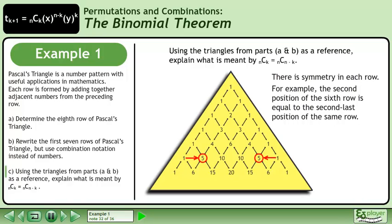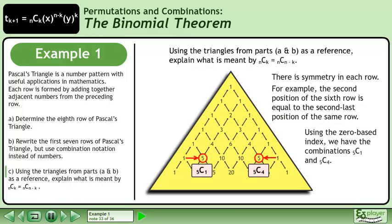There is symmetry in each row. For example, the second position of the sixth row is equal to the second last position of the same row. Using the zero-based index, we have the combinations 5 choose 1 and 5 choose 4.